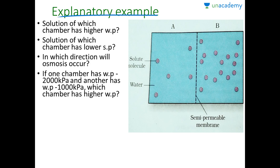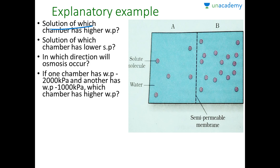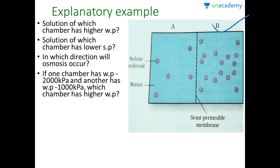To explain this, consider an example: there are two solutions A and B. Solution A has fewer solute molecules compared to solution B, and these two are separated by a semi-permeable membrane. Solution A has higher water potential because it is more hypotonic. Since no pressure potential is mentioned, we take ideal atmospheric conditions, so water potential equals solute potential. Solution B has lower water potential and therefore lower (more negative) solute potential compared to solution A.